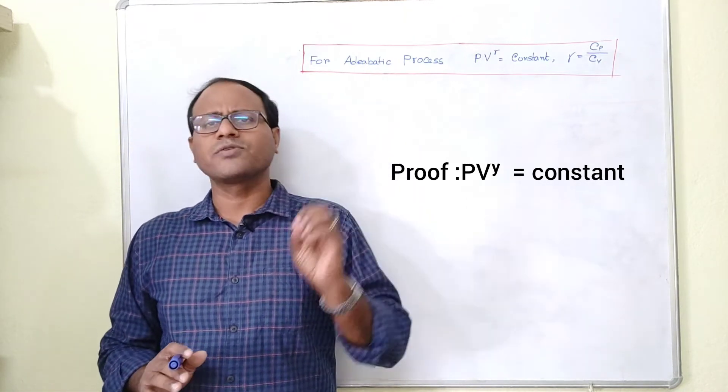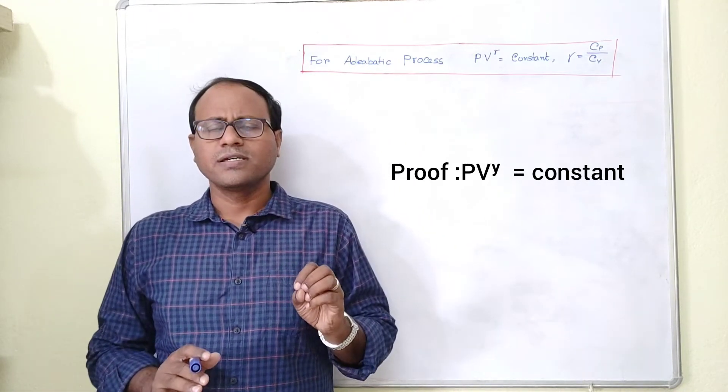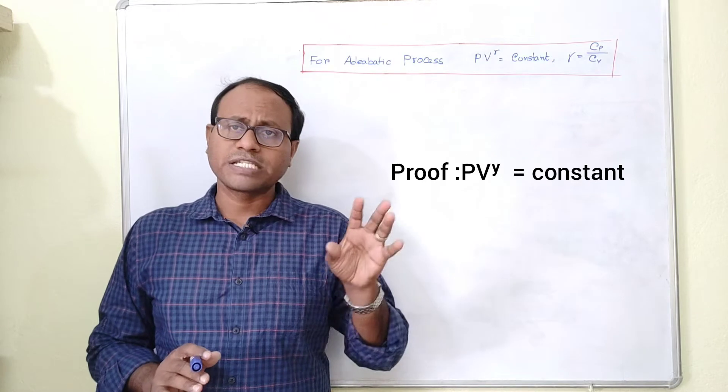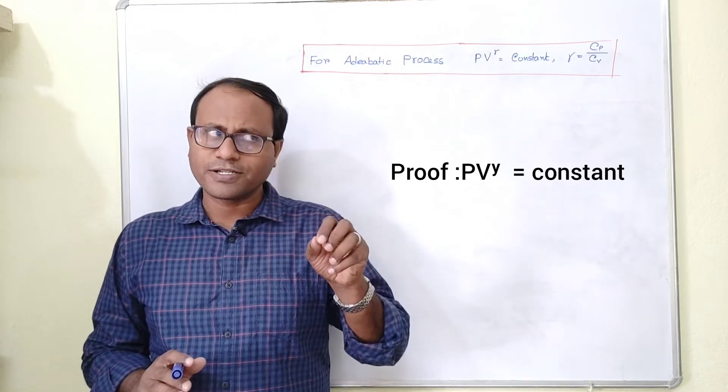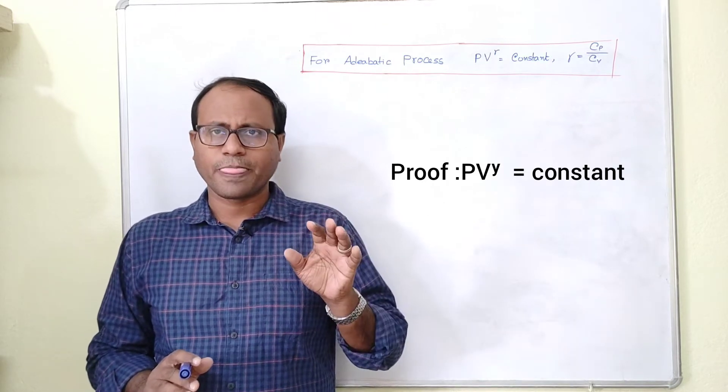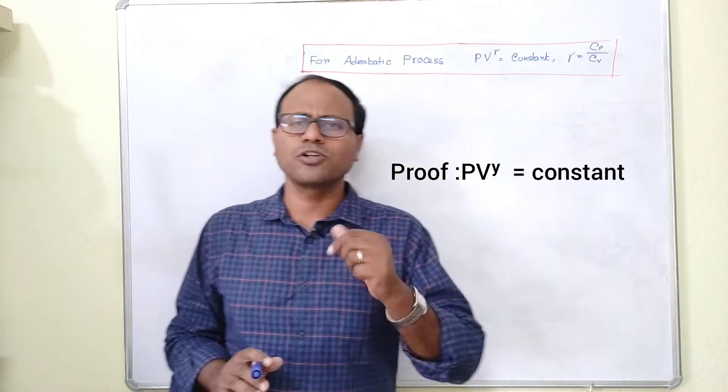The isothermal process equation — by the equation of state, for an isothermal process the temperature is constant, so pressure times volume is equal to constant.